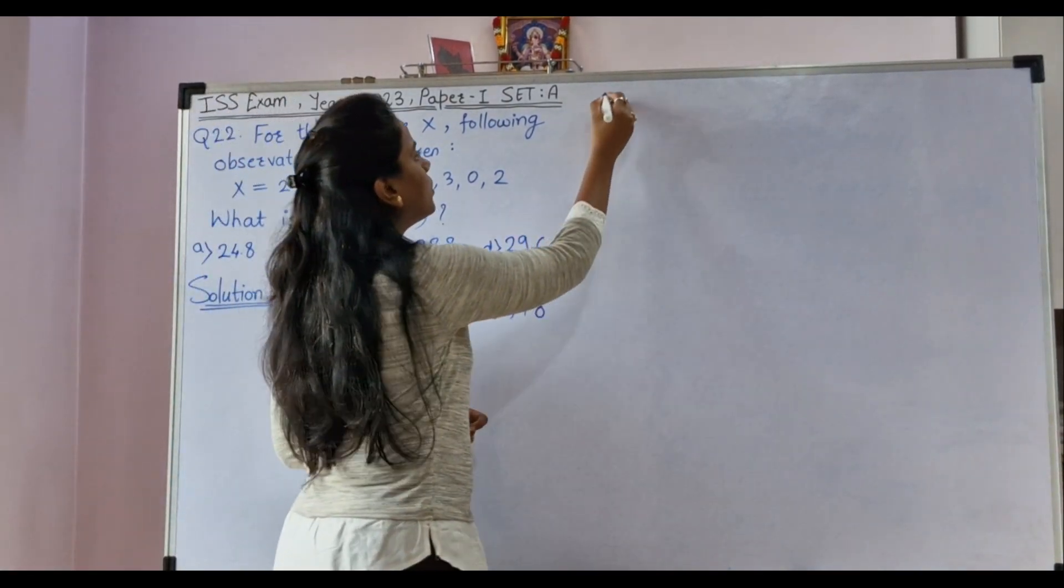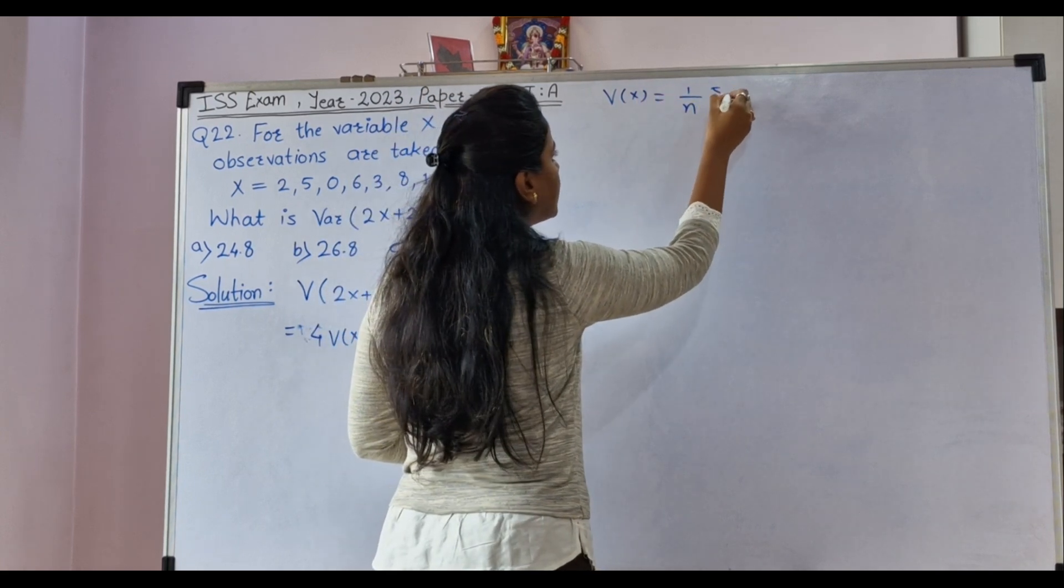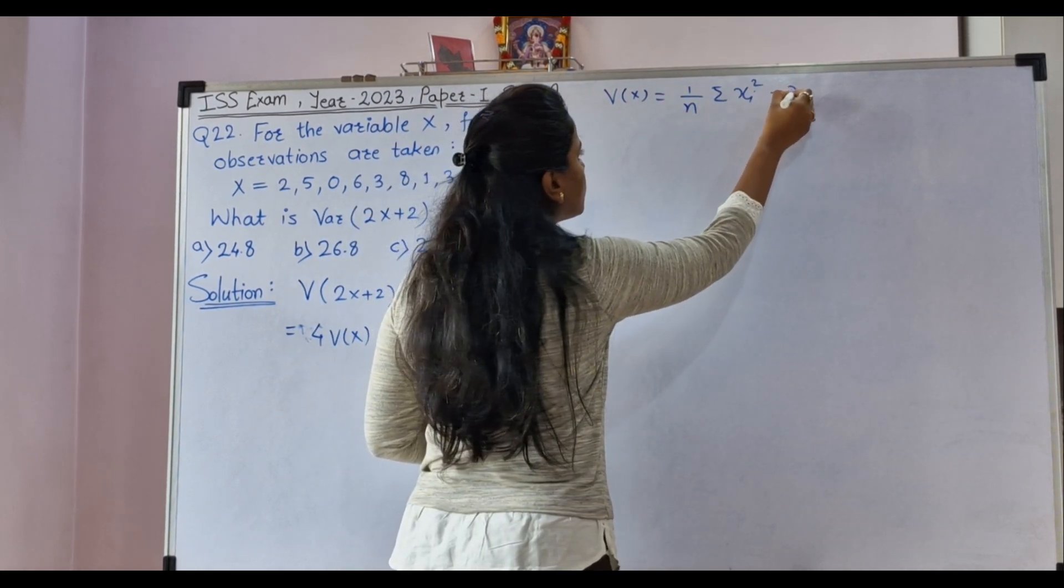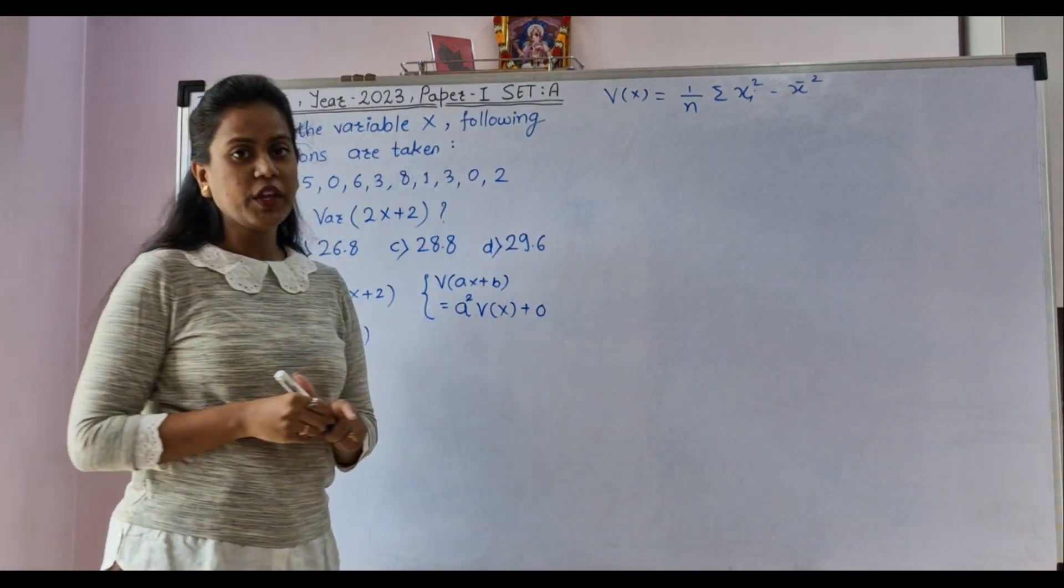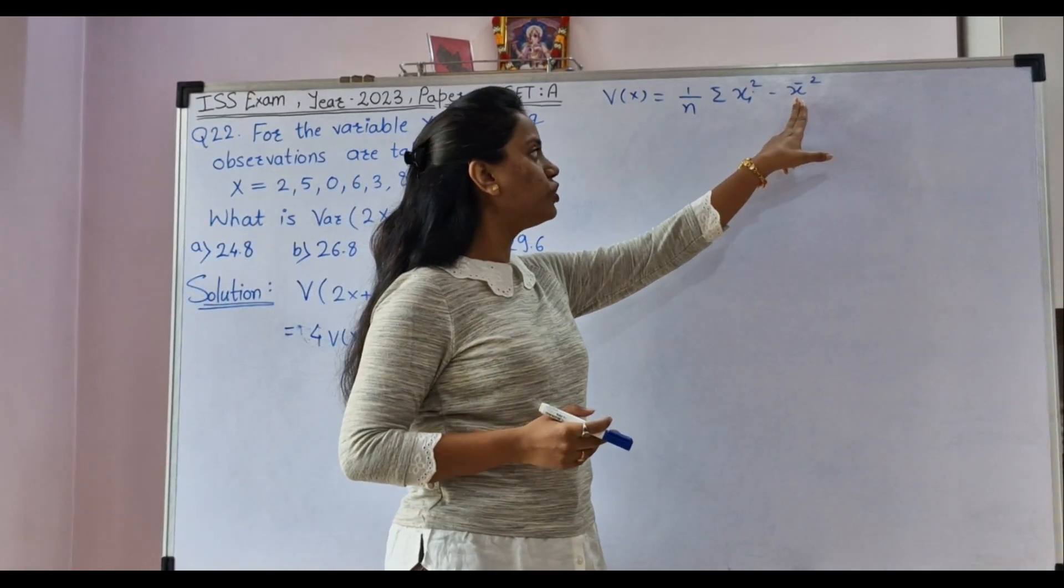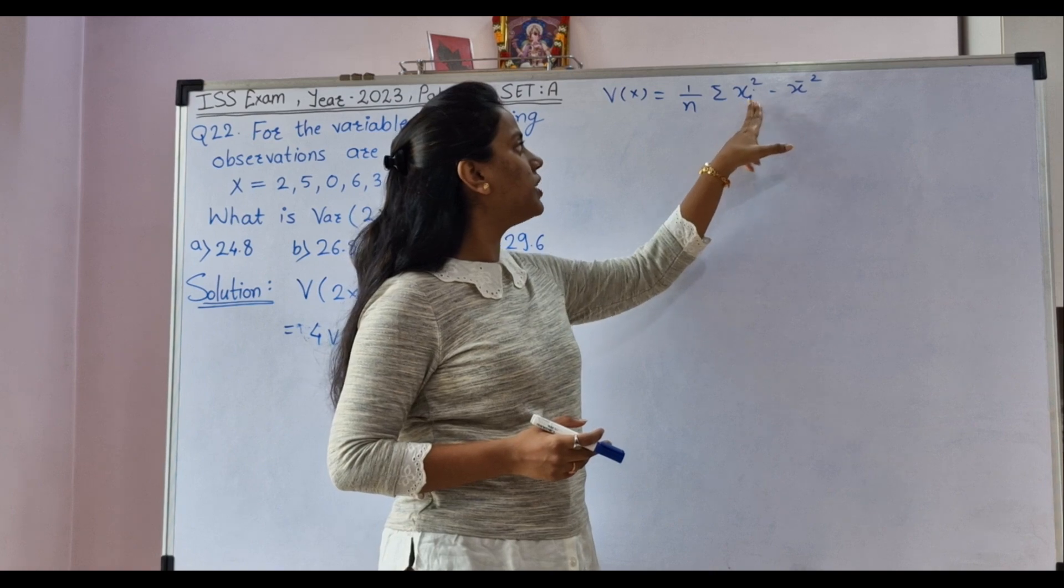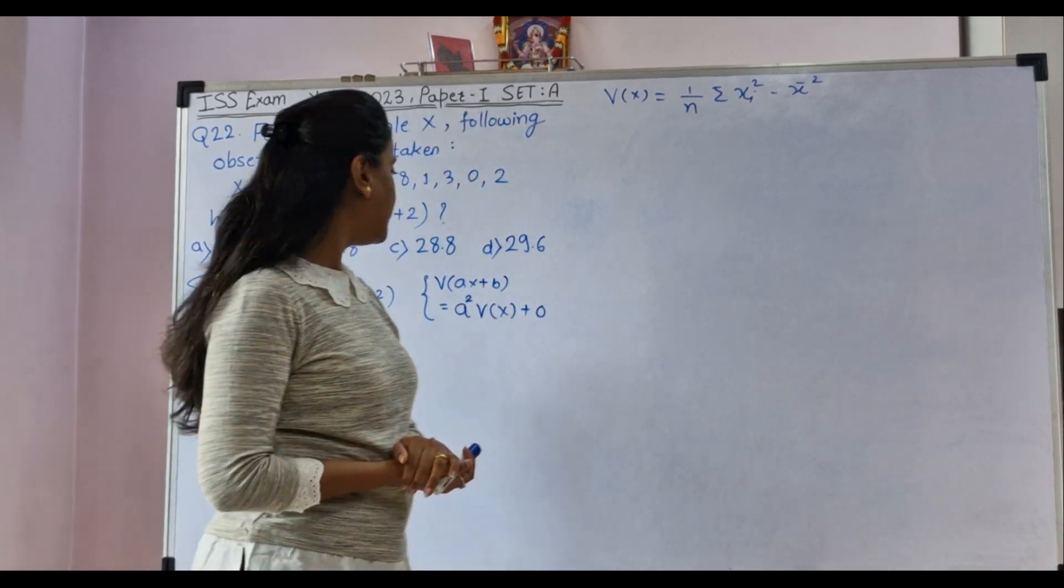Now what is the formula for variance of X? It is 1 upon N summation Xi square minus X bar square. So, here we need two quantities. First, we should find out X bar and second, we want summation Xi square.